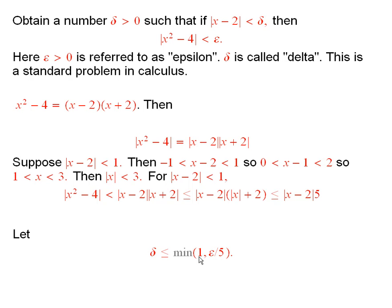Well, since delta is less than 1, and since I'm taking x minus 2 less than delta, it implies that this inequality holds. And now, since delta is less than epsilon over 5, I could put an epsilon over 5 here, and I find that this is less than epsilon. And that is what we wanted to show.